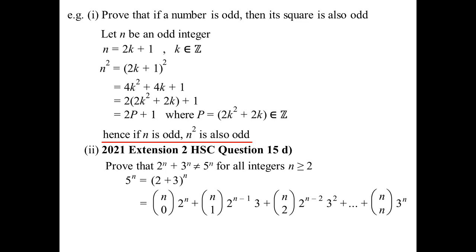The expansion gives: NC0 times 2^N, and as we go along, the powers of 2 go down by 1, the powers of 3 go up by 1, with all those binomial coefficients in front. We're trying to show this is not equal to 2^N + 3^N. Well, it has to be greater than 2^N + 3^N — because the very first term is NC0, which is 1, times 2^N, and the very last term is NCN, which is 1, times 3^N. But we've got all these middle terms, and they have a positive value. So we must have something bigger than just those two terms added together.